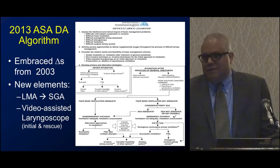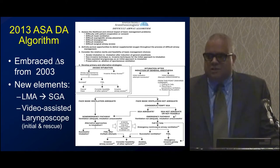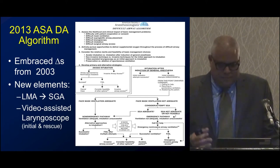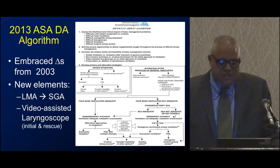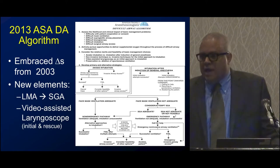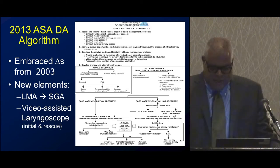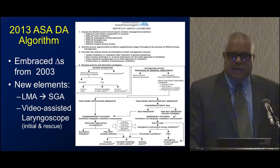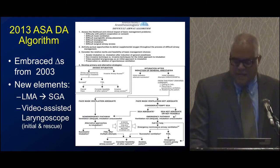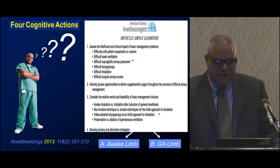The difficult airway algorithm is published about every seven to ten years by the ASA. The last one was in 2013, and the main changes from prior algorithms were that they embraced supraglottic airways—particularly laryngeal mask airways—as rescue devices and conduits toward a more permanent airway. The ASA also added that video-assisted laryngoscopy could be included in protocols for managing a difficult airway.